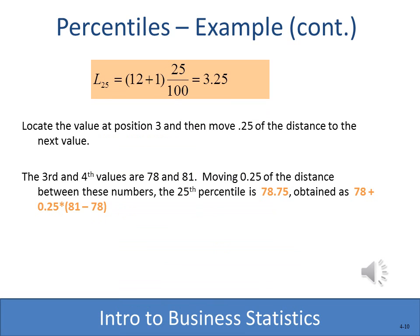Because the 25th percentile came out to 3.25, we find the value at position 3 and move 0.25 — a quarter of the distance — toward the next value. The third and fourth values in the data set are 78 and 81, so we compute 78 + 25% of (81 − 78), ending up with a value of 78.75.